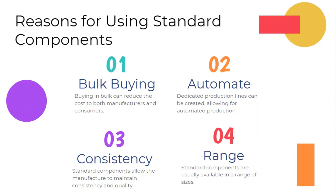These companies can divide the equipment cost across millions of parts, automate the processes, use labour efficiently, and ensure that consistency and quality of products is maintained. The standard parts can then be bought at a low cost by whoever needs them. These parts are normally available in a range of standard sizes, and designers normally take this into consideration when designing new products.